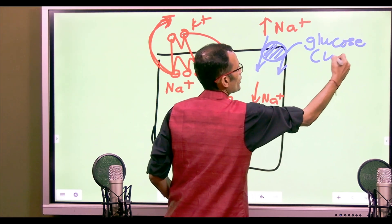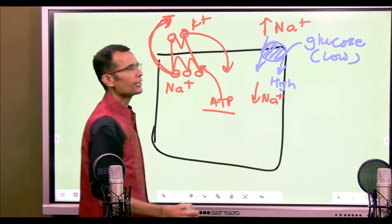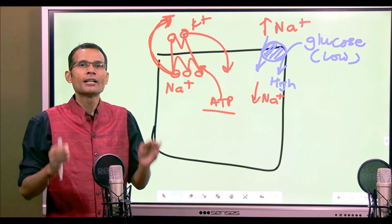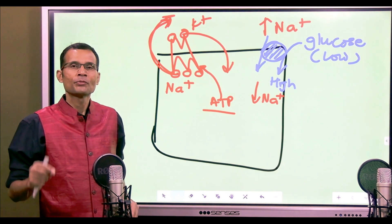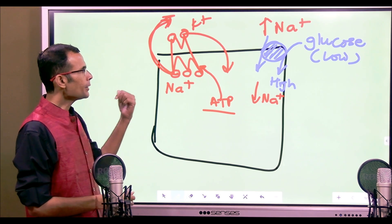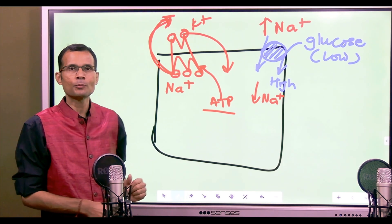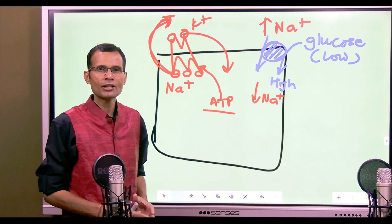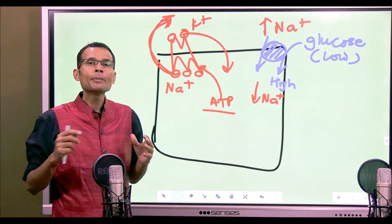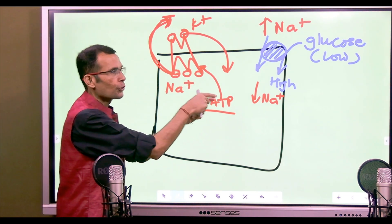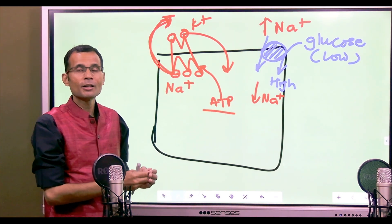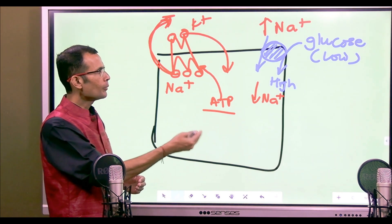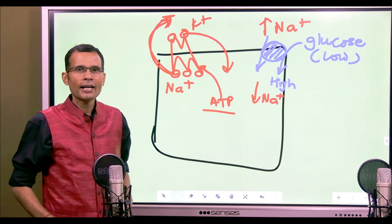One of those substances is sodium itself, brought back into the cell from high to low concentration. That high-to-low movement has a certain pull — potential energy — which is utilized by the carrier. As it carries sodium, it also brings another substance, such as glucose. That second substance — glucose — moves from its low to its high concentration. Because it's moving uphill, we call it secondary active transport of glucose.